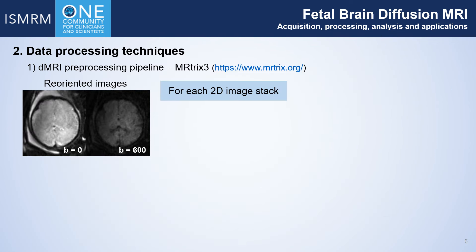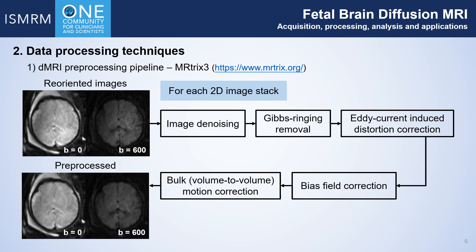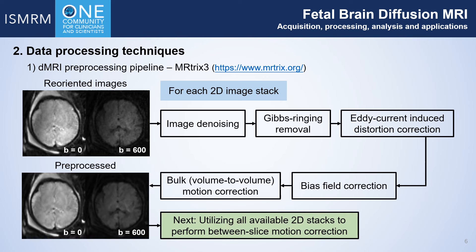After obtaining the data, we first need to run the standard dMRI pre-processing pipeline. This includes denoising, Gibbs ringing removal, eddy current distortion correction, bias field correction, and between-volume motion correction.